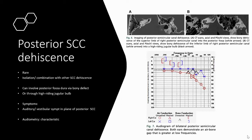Moving on to posterior semicircular canal dehiscence — this is rare and can occur in isolation or in combination with other semicircular canal dehiscences, though far less common than the superior type. It can involve the posterior fossa dura via a bony defect, or even through a high-riding jugular bulb. Patients present with auditory and vestibular symptoms predominantly in the plane of the posterior semicircular canal. CT scans in axial and Poschl views demonstrate the bony dehiscence of the superior limb of the right posterior semicircular canal, illustrated by white arrows.